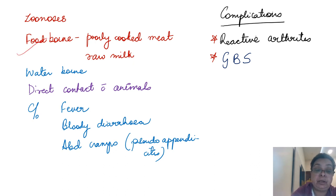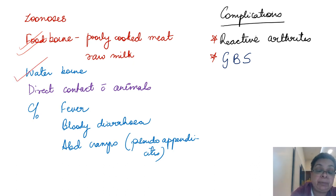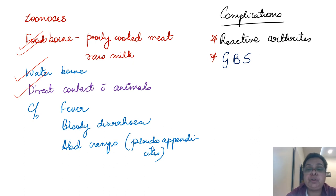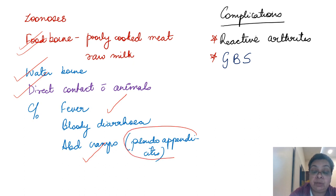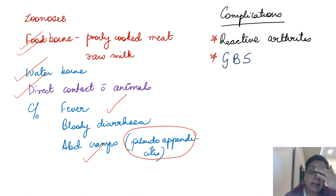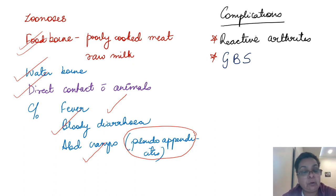It is generally acquired as either foodborne or waterborne — through poorly cooked meat, unpasteurized milk, ingestion of water contaminated with animal feces, or by direct contact with animals. Once ingested, after an incubation period of 2 to 7 days, the patient presents with fever and abdominal cramps. Sometimes the cramps are so severe they can resemble appendicitis — pseudo-appendicitis — also seen in Yersinia enterocolitica and Yersinia pseudotuberculosis. And of course there is mucus and blood in stools. Two important complications of campylobacteriosis are reactive arthritis and Guillain-Barré syndrome.